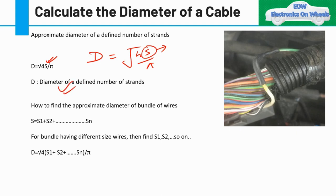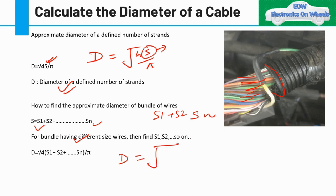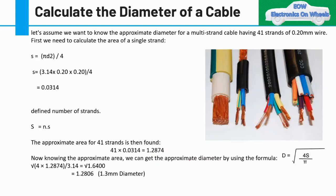If the bundle contains strands of different wire sizes — that is, different cross-sectional areas — you calculate S1, S2, S3 … Sn individually for each strand using the same π d² / 4 formula, then sum them. The bundle diameter becomes: D = √(4(S1 + S2 + … + Sn) / π). We'll now see a practical example of this.